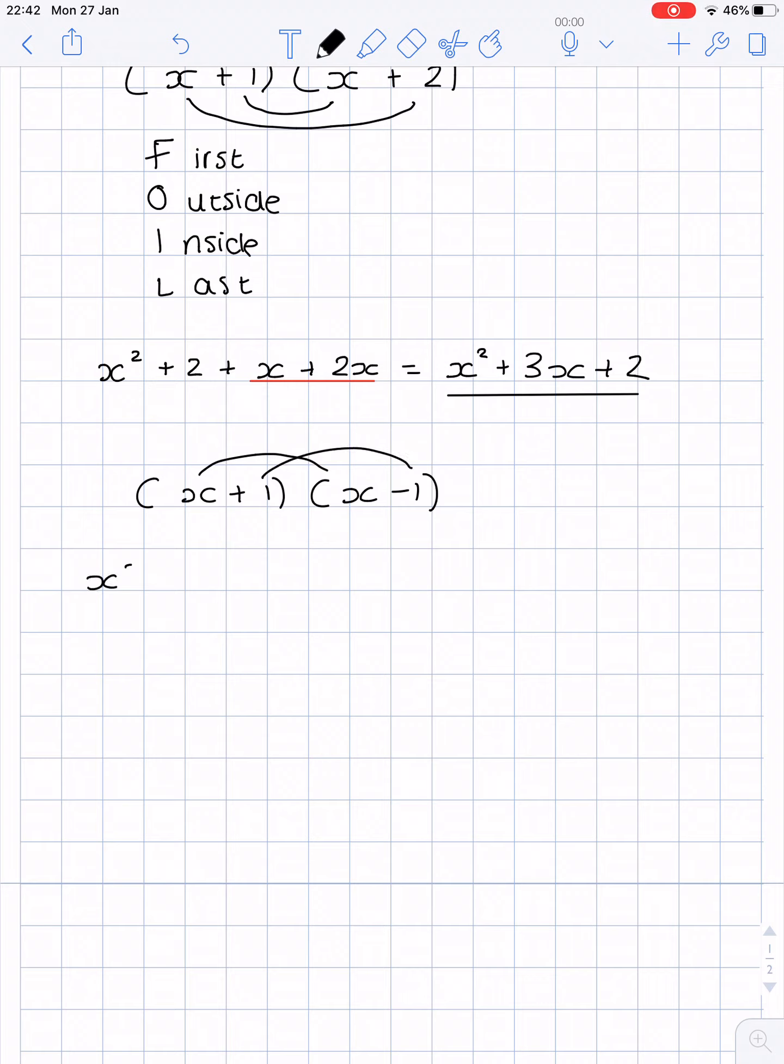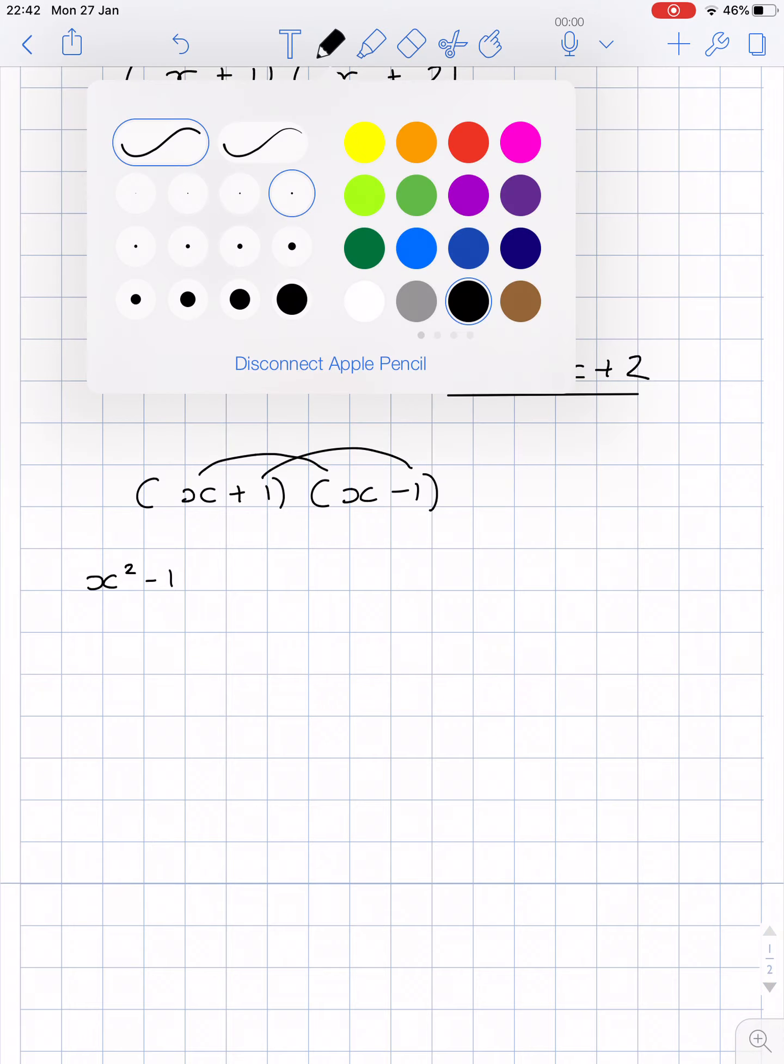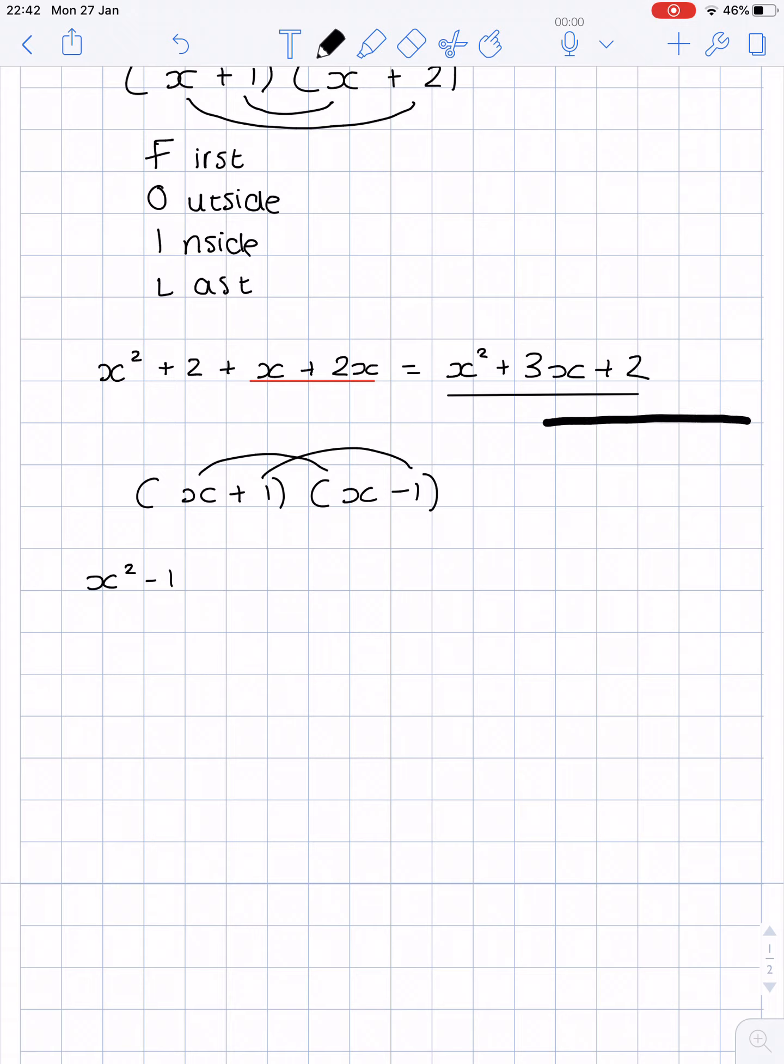x times x is x squared and 1 times minus 1 is minus 1. Because an important rule to remember is the operation is always positive unless there are two negatives.